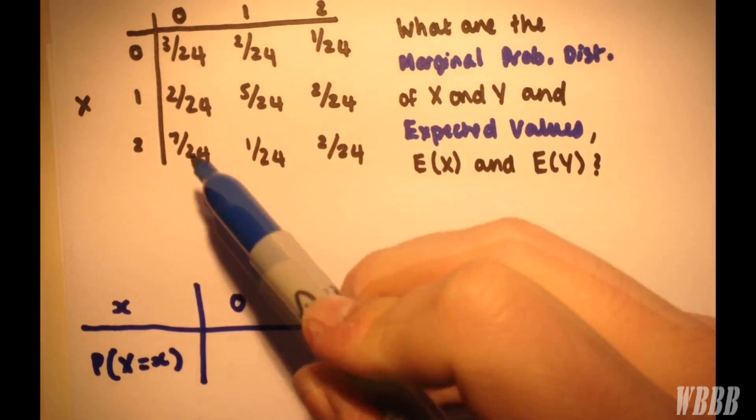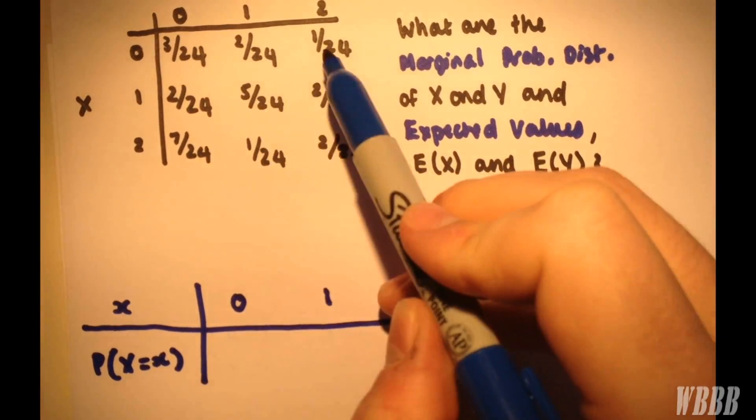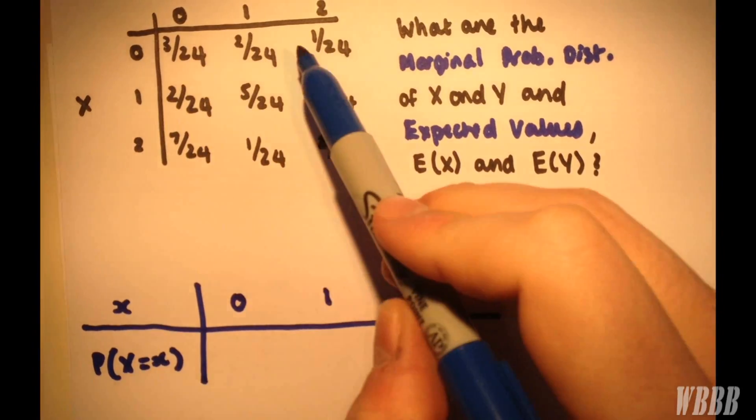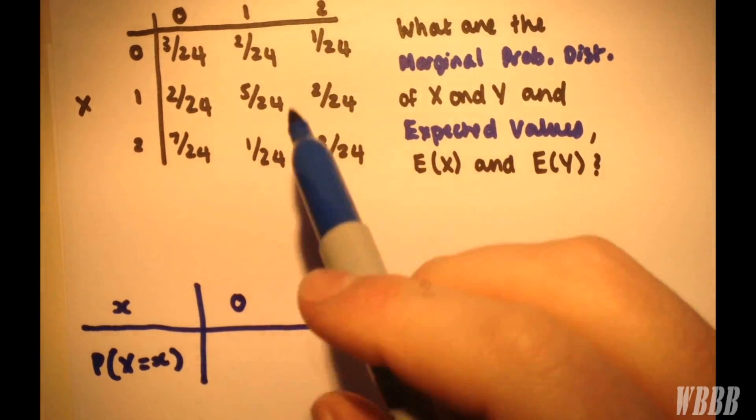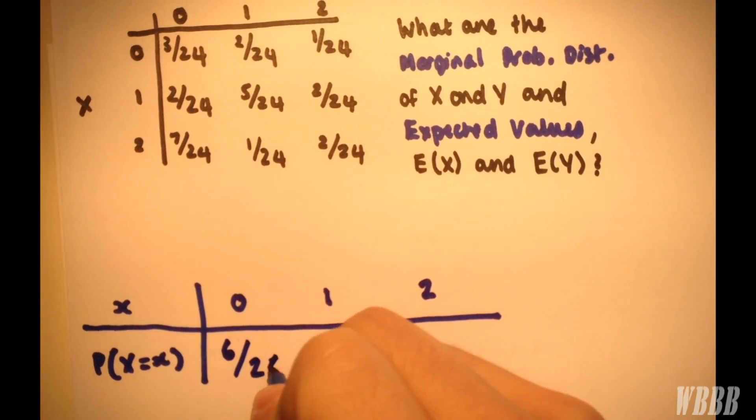And all we do to find 0 is add the values corresponding to 0 in the table. So we have 3, 2, and 1, giving 6 over 24.